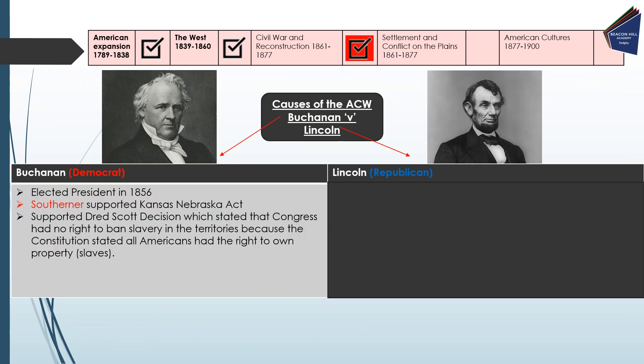In terms of the catalyst of the war, we have Buchanan — a Democrat — who was elected president in 1856. He was a Southerner who supported the Kansas-Nebraska Act and also the Dred Scott decision, which stated that Congress had no right to ban slavery in the territories because the Constitution stated that all Americans had the right to own property. The South saw slaves as their property, which is why he supported the Dred Scott decision.